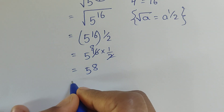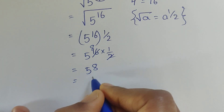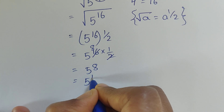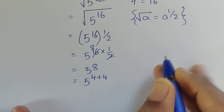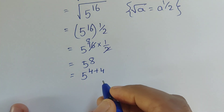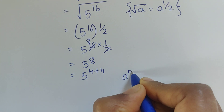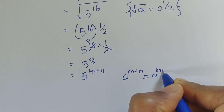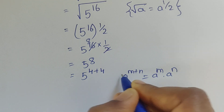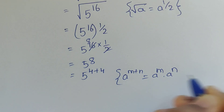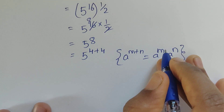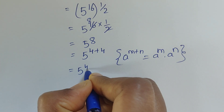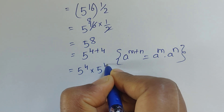We can write 5 to the power of 8 as 5 to the power of 4 plus 4. Using the formula a to the power of m plus n equals a to the power of m times a to the power of n, we write this as 5 to the power of 4 times 5 to the power of 4.